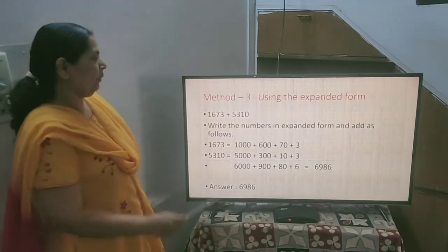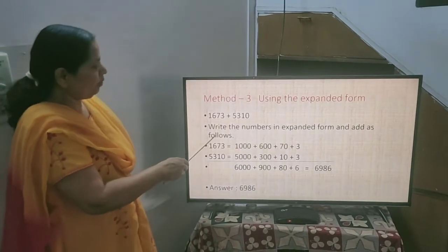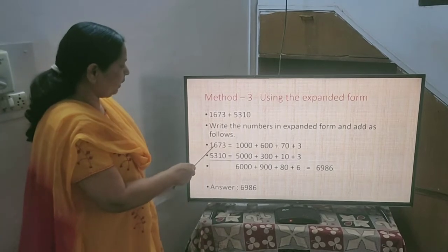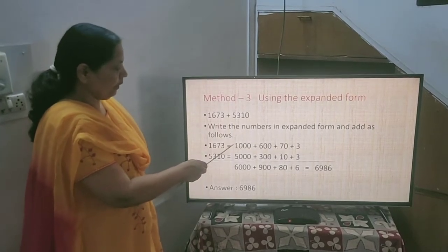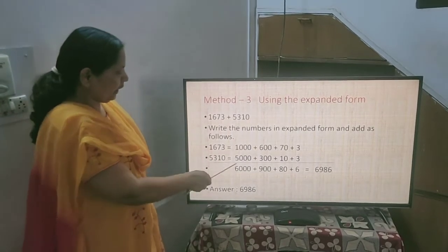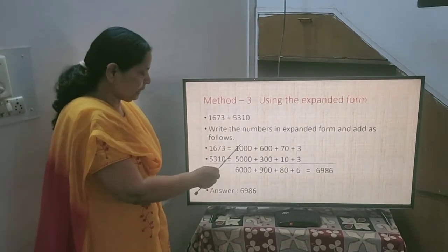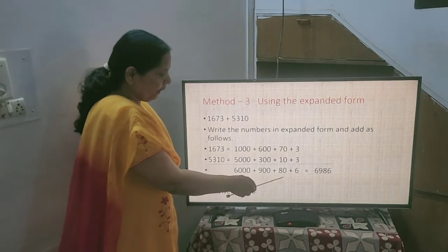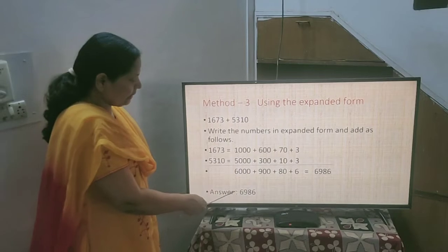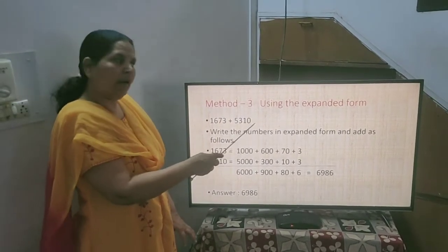So these are the methods. Now third method is using the expanded form. Here you have to expand the numbers as per their place values. Here we have done 1,673 in expanded form. Likewise 5,310 and 3. Now we have taken the total place value wise. It is 6,986. And the final answer which you are getting is 6,986. These are the 3 methods used for addition.